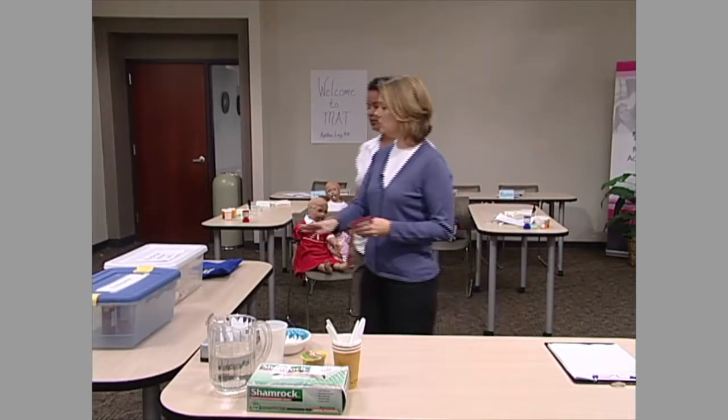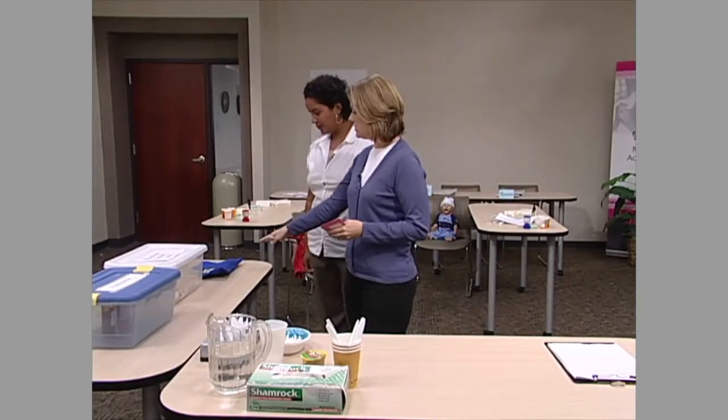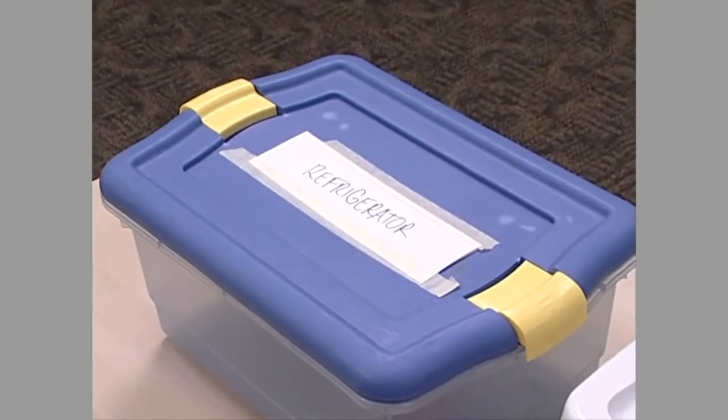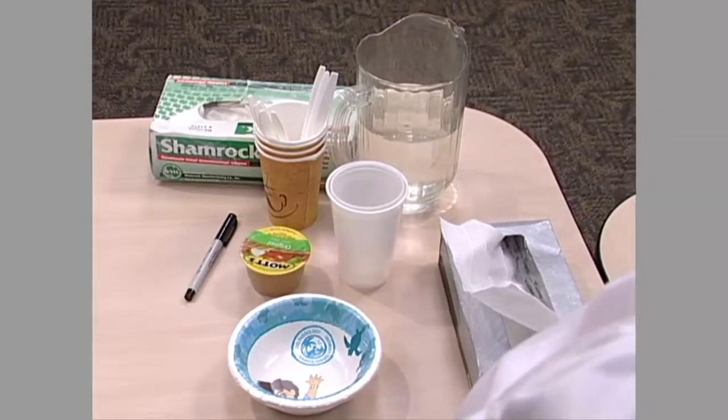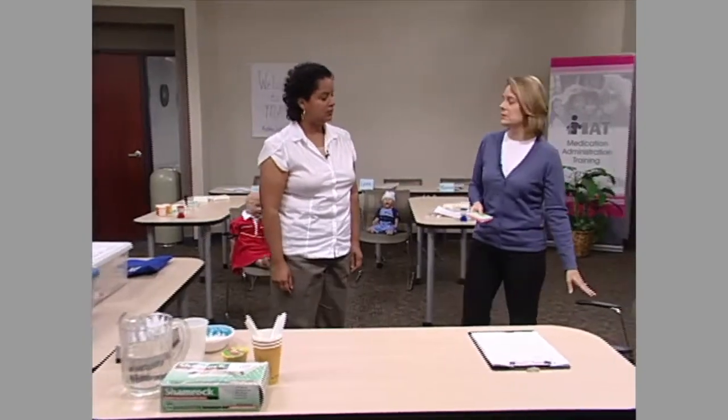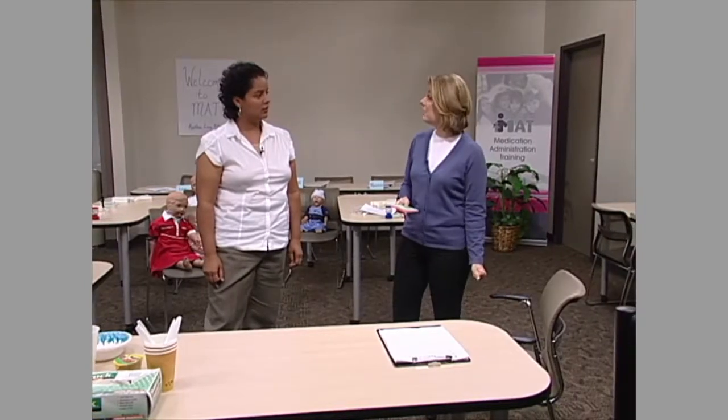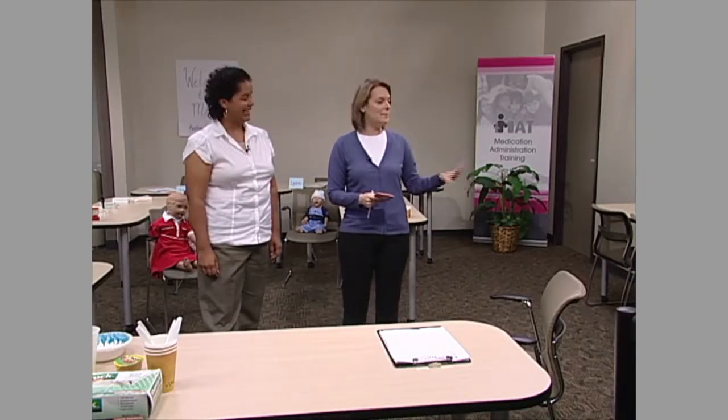The trainer continues orienting Luce to the room: 'Here are your medication supplies — gloves, water, spoons, anything like that. This chair can be whatever you need it to be, like a high chair, to give the medication safely to the child. We have a garbage can and a pretend sink — you'll just say to me that you're washing your hands and the child's hands. Any questions before we get started?'